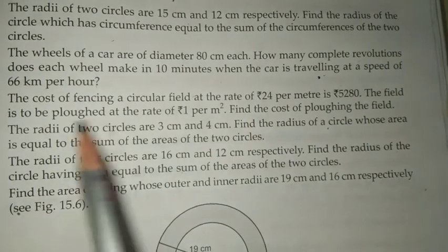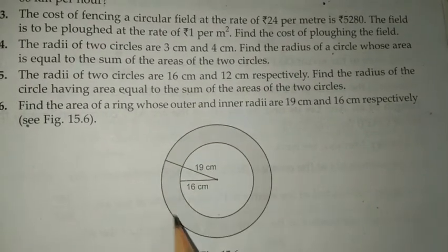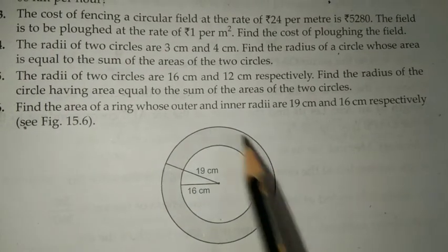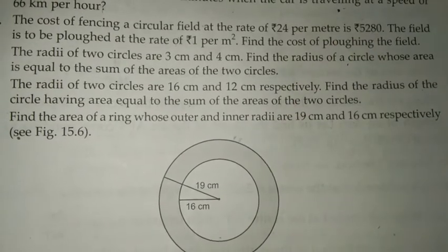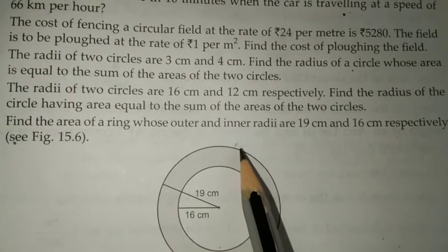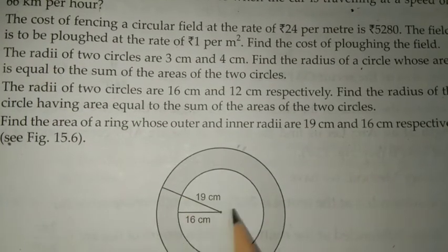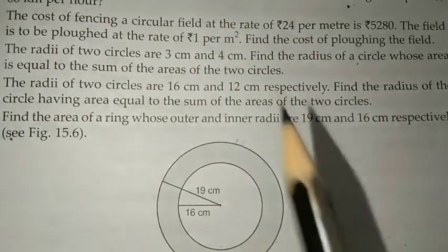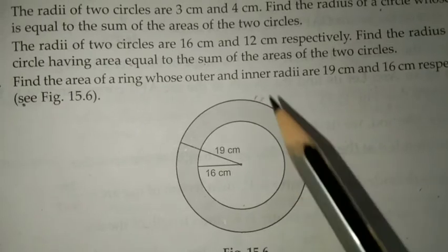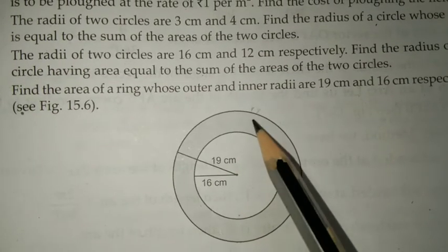Let's move on to question number 3. The cost of fencing a circular field is given, and we need to find the cost of plowing the field. That means we need to find out area. From circumference we're going to find out radius, and from using the radius we're going to find out the area and the cost of plowing that area.